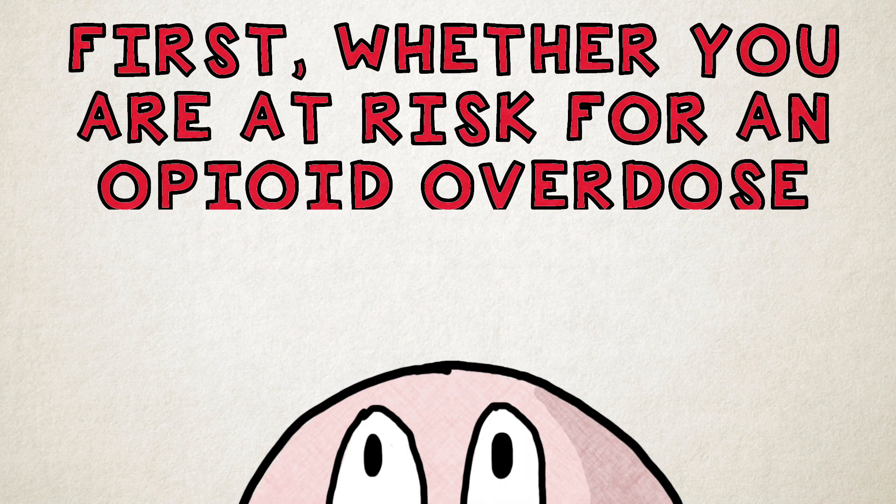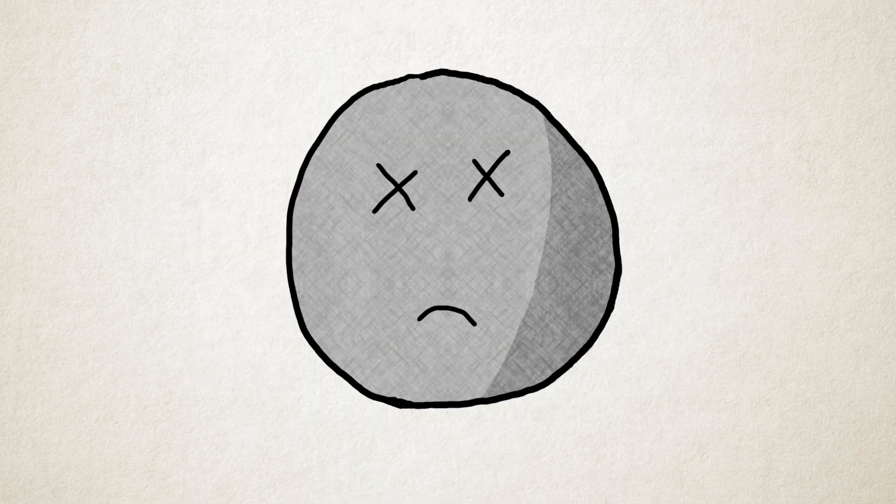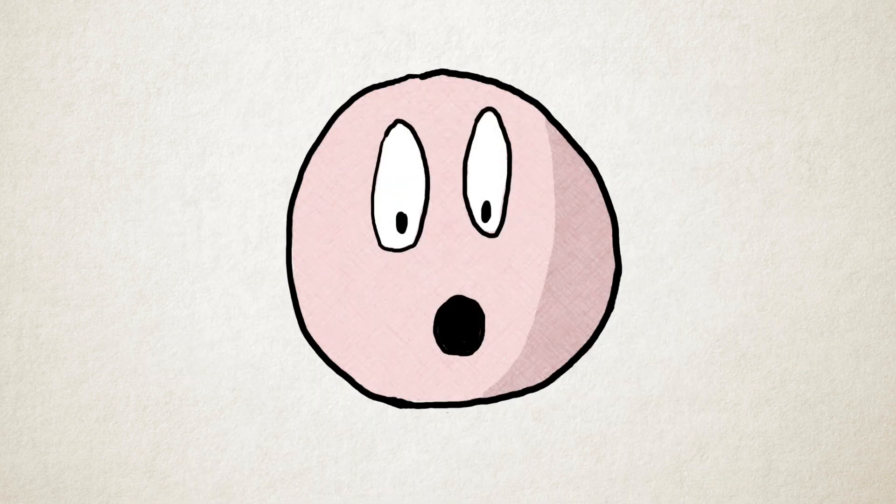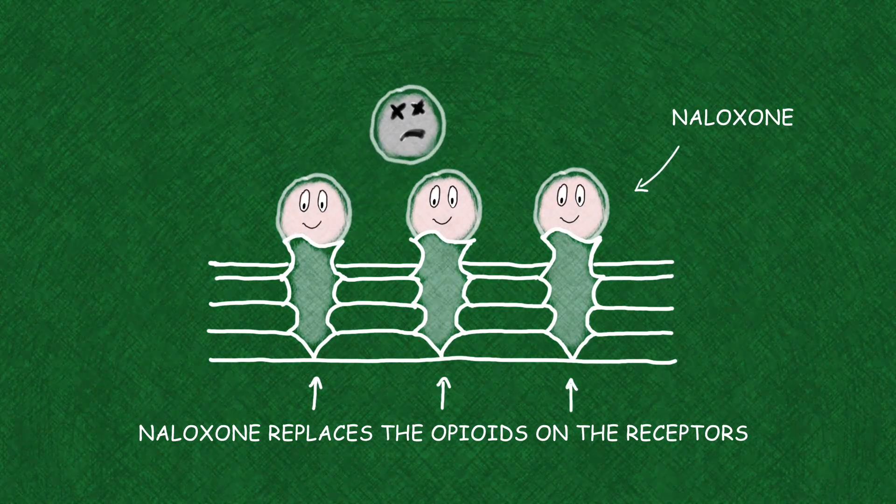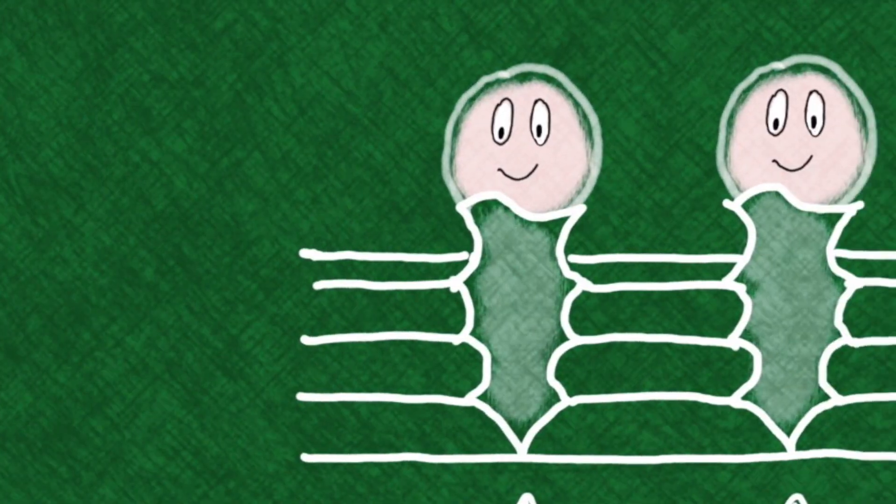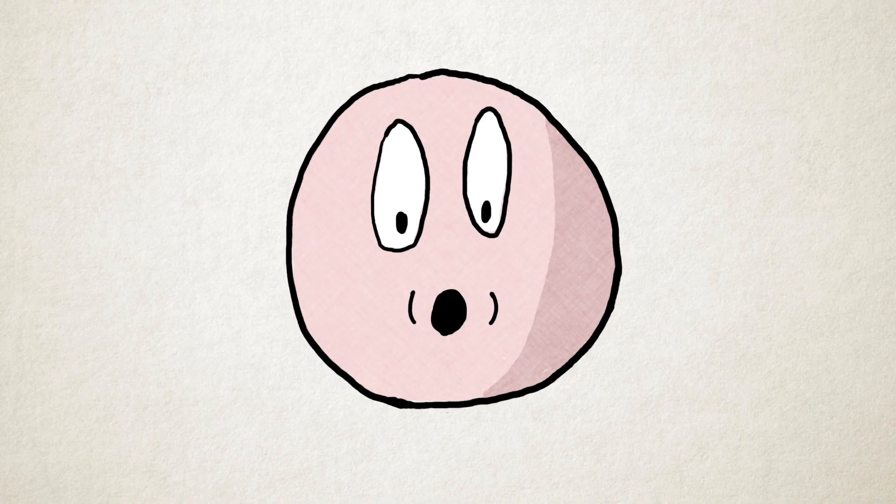First, whether you are at risk of an opioid overdose or not, get naloxone today. If used quickly, it can reverse the fatal effects of an overdose in just moments. Naloxone works by kicking those opioids off of the receptors. Naloxone takes the place of the opioids in the brain's receptors, allowing them to begin breathing again.